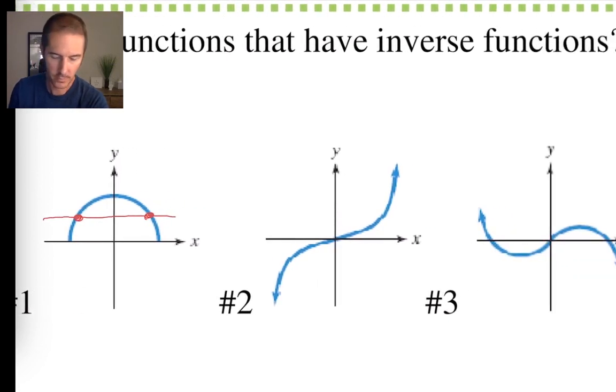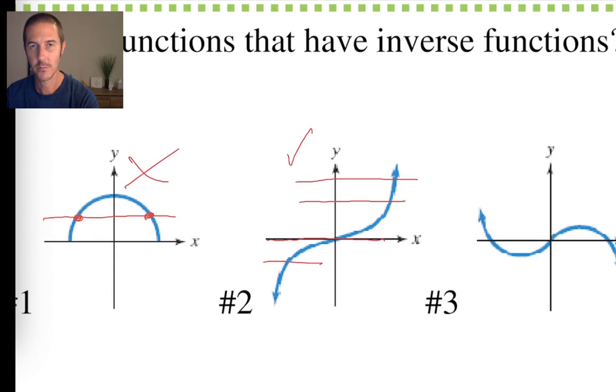What about number two? That one's a no. Number two, is it a function? Does it pass the vertical line test? It does. What about the horizontal line test? Can you draw a horizontal line through this graph that crosses the graph at more than one point? I don't think so. This horizontal line only crosses at one point. Even the x-axis is only crossing the graph at one point. Looks good. This graph does pass the horizontal line test, and therefore, it has an inverse that is a function. Since this function has an inverse that's a function, that means that this bad boy is a one-to-one function.